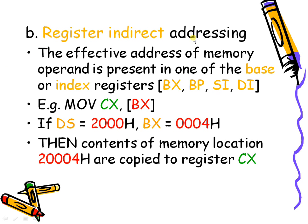In register indirect addressing mode, the effective address of the operand is present in one of the base or index registers — BX, BP, SI, or DI. When you place brackets around one of these registers, its value is treated as an address. For example, DS is added with BX to give the physical address (e.g., 20004H), and the contents at that location are copied into CX.